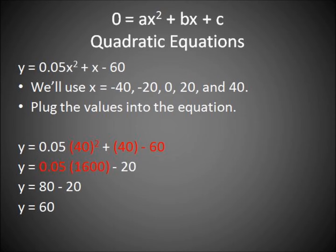Plug in 40. 0.05 multiplied by 40 squared plus 40 minus 60 gives us 0.05 multiplied by 1,600 minus 20, which equals 80 minus 20, resulting in 60.